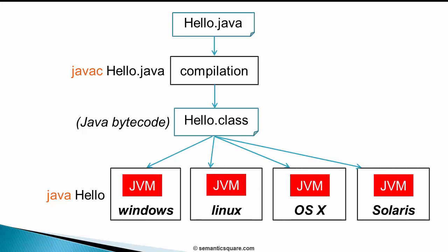hello.class can be executed on any platform that has a JVM installed. To execute the class file, we use the command java hello, where java is the Java interpreter, and the command is the same regardless of platform. This command creates an instance of JVM — JVM is software, and the operating system loads it into memory as soon as we execute this command. The JVM then executes hello.class, interpreting the Java bytecode present in it.